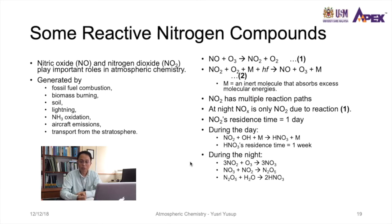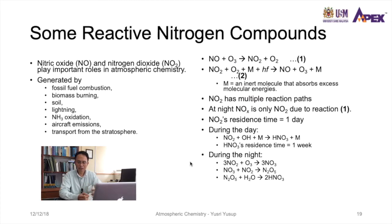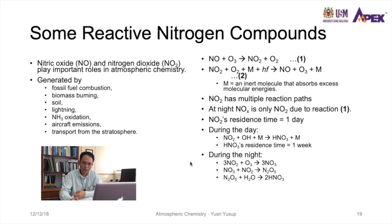Nitrogen dioxide has multiple reaction paths depending on the diurnal trend. At night, with no sunlight, nitrogen oxides exist only as nitrogen dioxide. The residence time of nitrogen dioxide is about one day. During the day, nitrogen dioxide reacts with the hydroxyl radical and a molecule M to form hydrogen nitrate (HNO₃) in vapor form, which has a residence time of about one week.